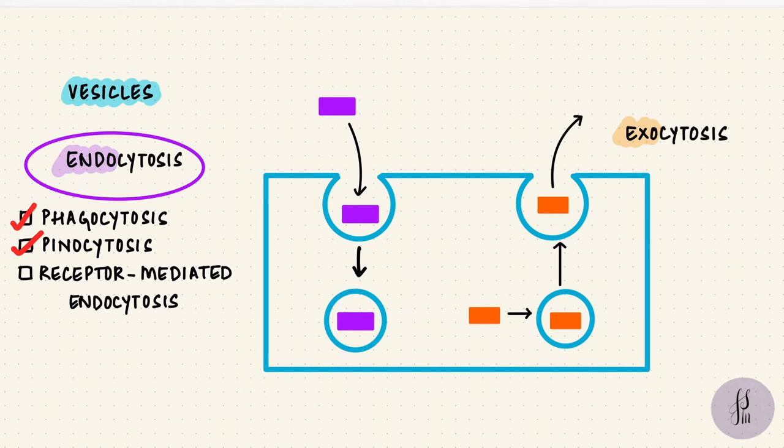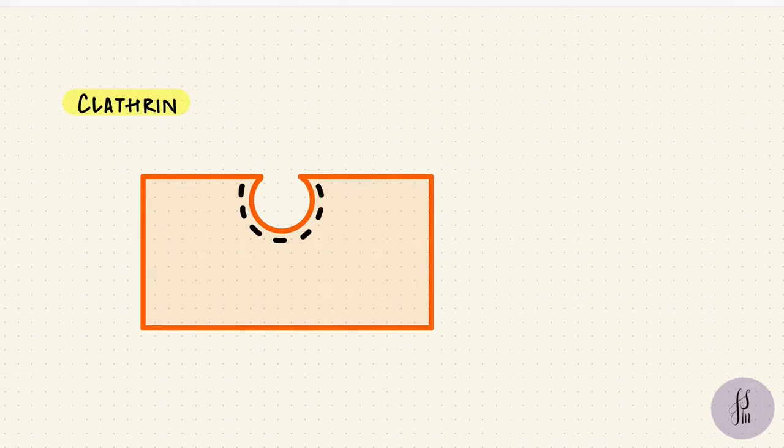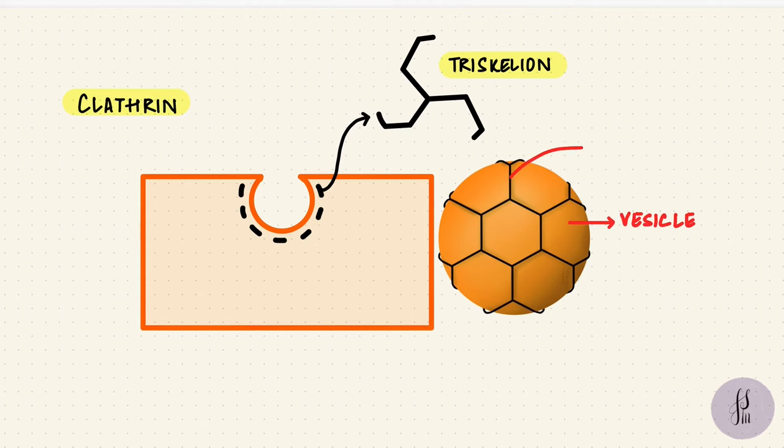This process can be more refined with receptors, and that's what happens in receptor-mediated endocytosis. Now most forms of endocytosis use something called clathrin to form the vesicles. This clathrin has a triskelion structure, so it has three legs. It's a three-dimensional structure, so it forms a cage around the vesicle.